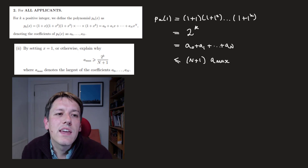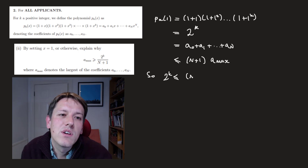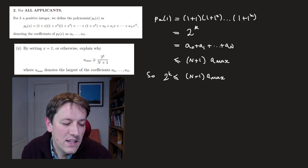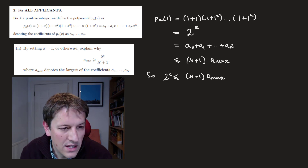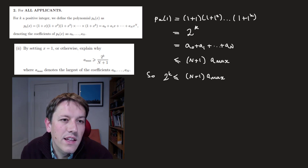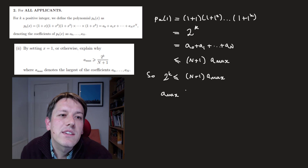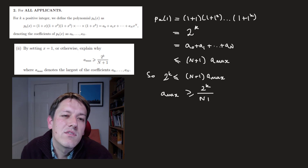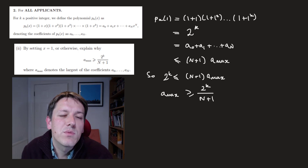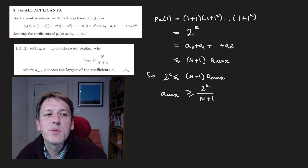Each of these terms has to be less than or equal to the maximum term, so the sum must be less than or equal to (N+1) times a_max. So I've got 2^k ≤ (N+1) × a_max, and that just rearranges to give a_max ≥ 2^k/(N+1), which is what we want to show.